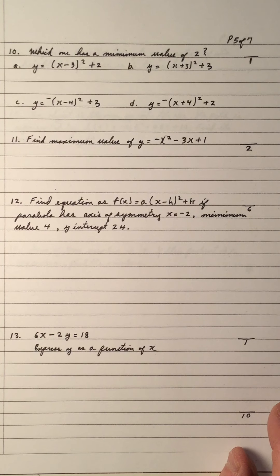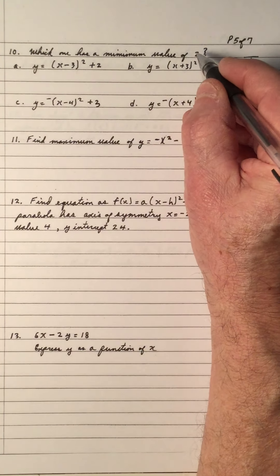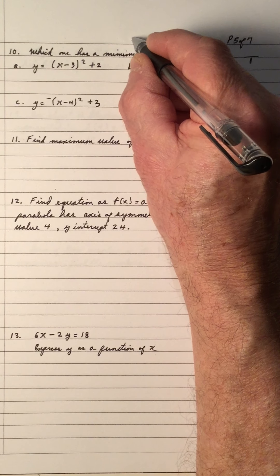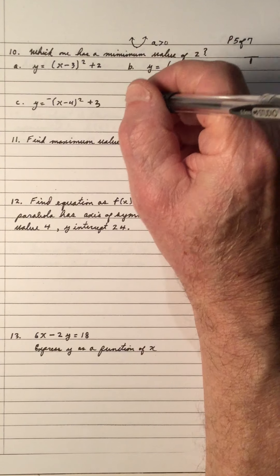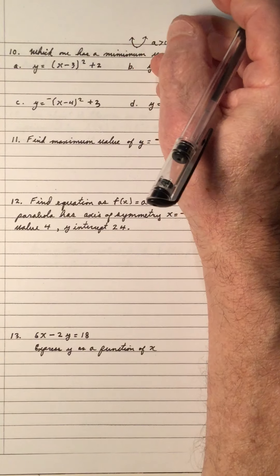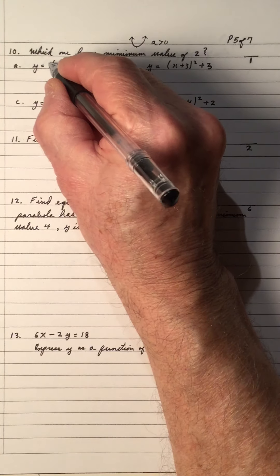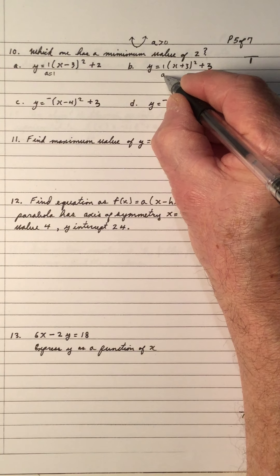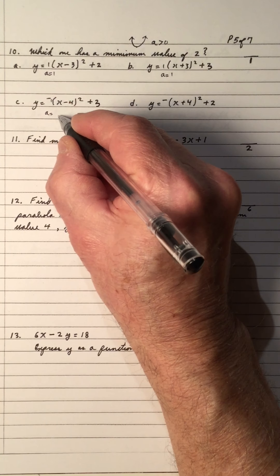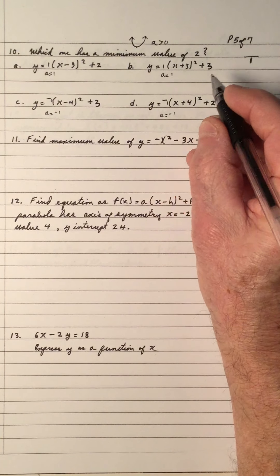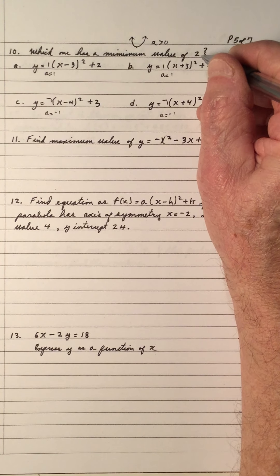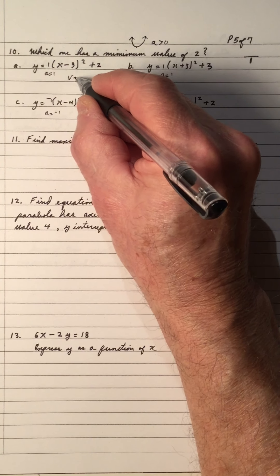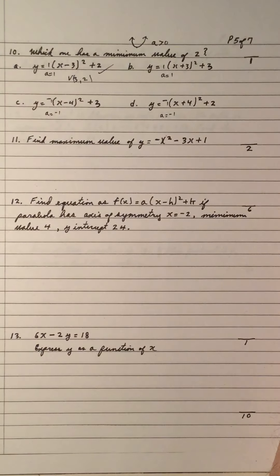Number 10: which has a minimum value of 2? A minimum value means the parabola opens upward, so a is greater than 0. Eliminate options with negative a. The minimum value is always the y-value of the vertex. The vertex (3, 2) with positive a gives minimum value 2. The answer is A. Give yourself a mark.